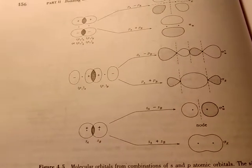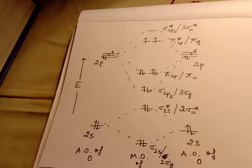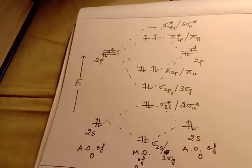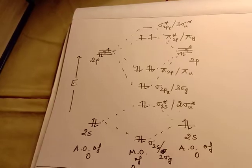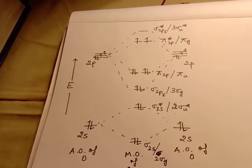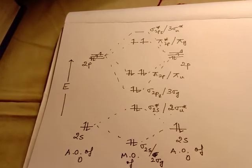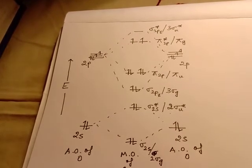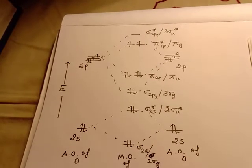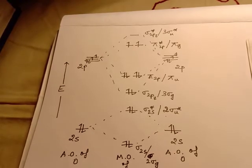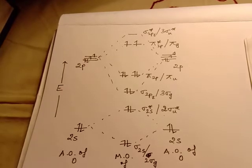Now moving on to the actual molecular orbital diagrams that we need to know. This is the molecular orbital diagram of oxygen. As you can see, 1S has not been represented because it is considered to be an inner orbital — those electrons do not participate in any chemical reaction, so they are not considered. We will only consider 2S and 2P. An oxygen atom has 8 electrons, so if we do not consider the 2 electrons in 1S, that leaves us with 6 electrons.